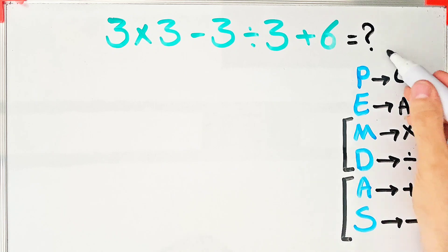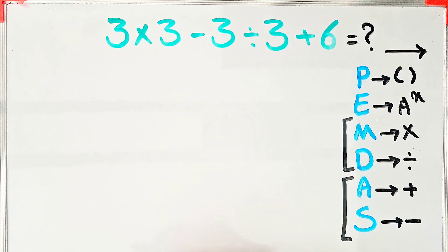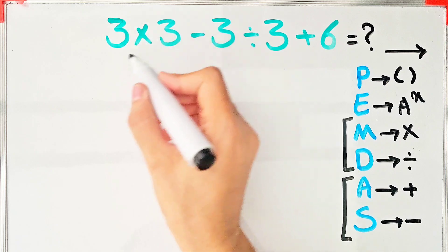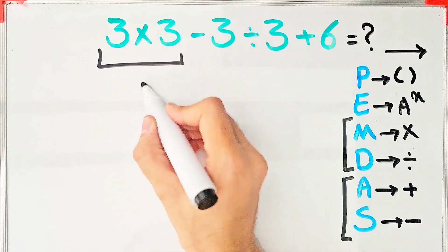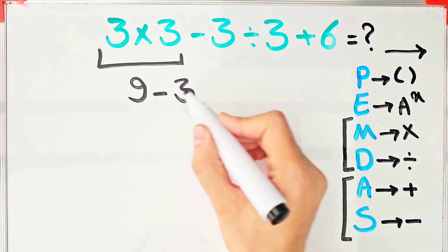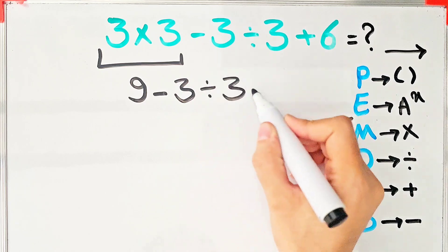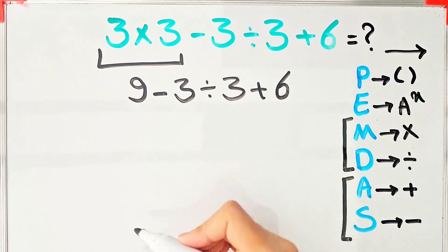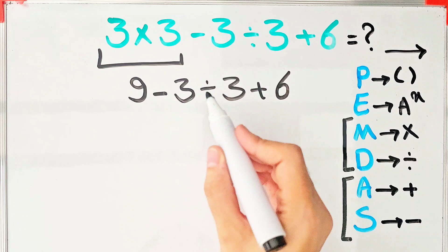have both in an expression, we start from the left and simplify the question. First, we do this multiplication: 3×3=9. 9-3÷3+6. Now we have subtraction, division, and addition...